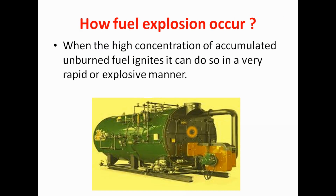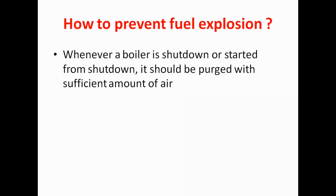Now, how to prevent this? For preventing this, there is a very simple method. Whenever our boiler is shut down or started after a shutdown, it should be purged with a sufficient amount of air. Purging means we stop the flame and only start the blower, so that excess unburned fuel present in the furnace will go out through the chimney, and the fuel-rich environment from the furnace will get removed. This is the method by which we can prevent fuel explosion in the boiler.